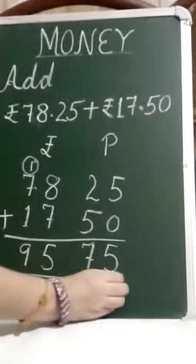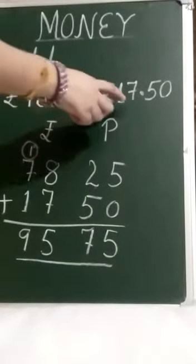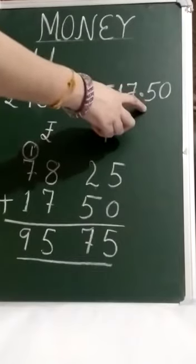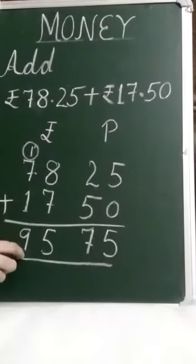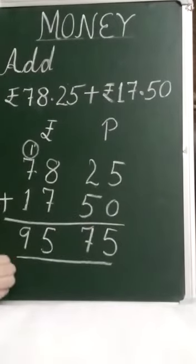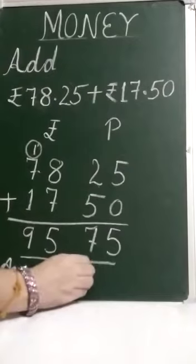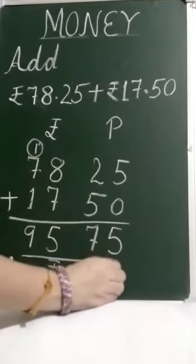So when we add 78 rupees 25 paise and 17 rupees 50 paise, then our answer is 95 rupees 75 paise. Answer equal to rupees 95 and 75 paise.